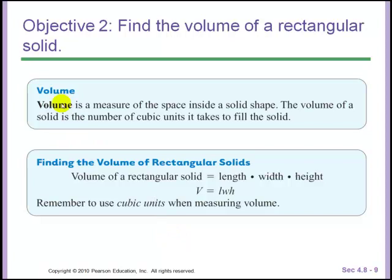To find volume, volume is the measure of the space inside a solid shape. So perimeter, which is the first thing we learned, was the outside edge or the distance around the outside edge of a two-dimensional shape or a flat shape. Area was the stuff inside that two-dimensional shape. Now, volume would be the stuff that fills a three-dimensional shape.